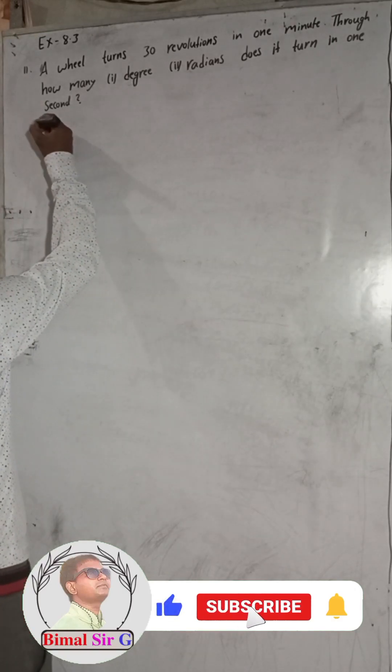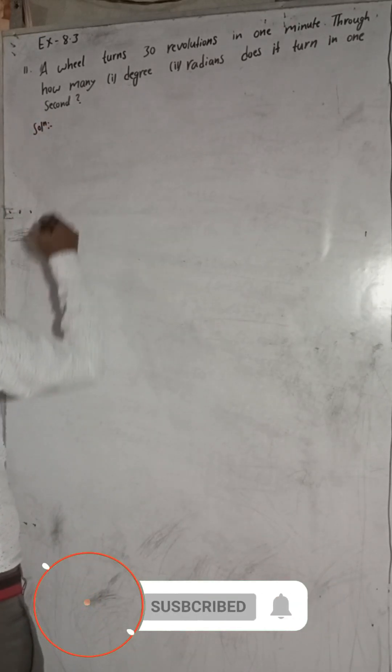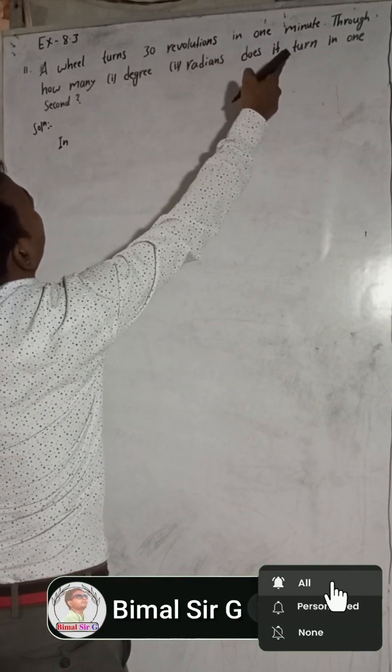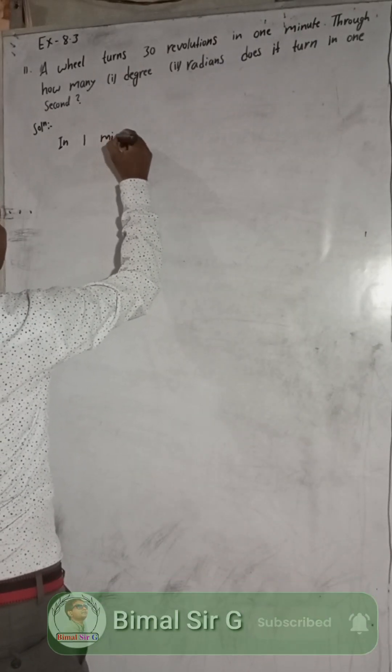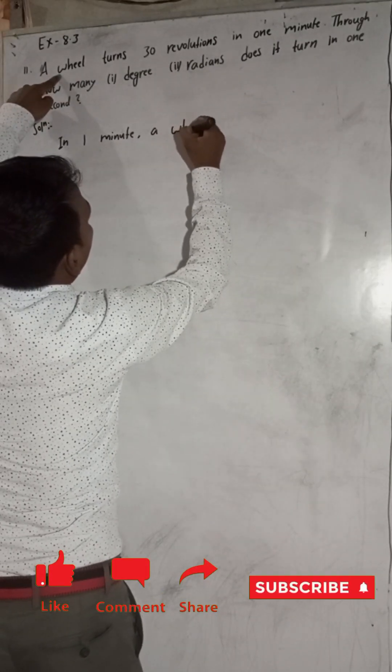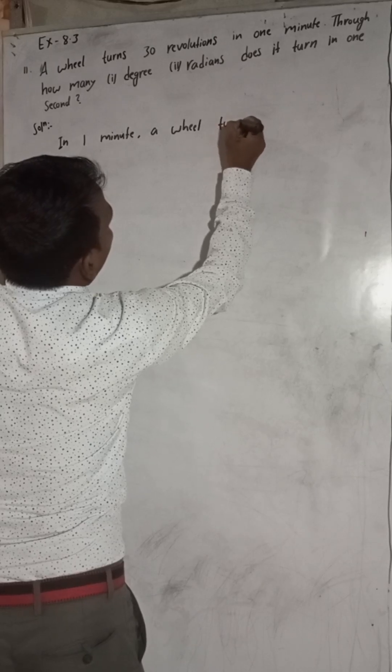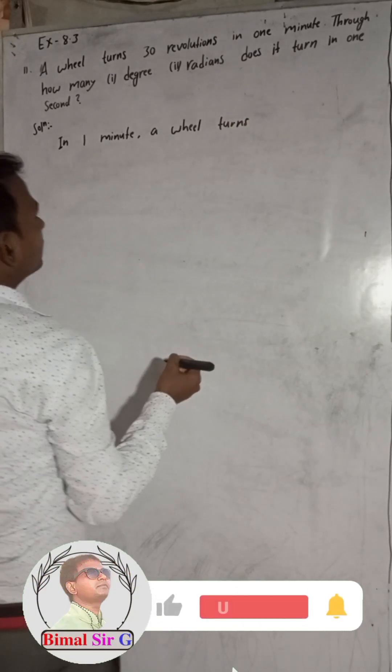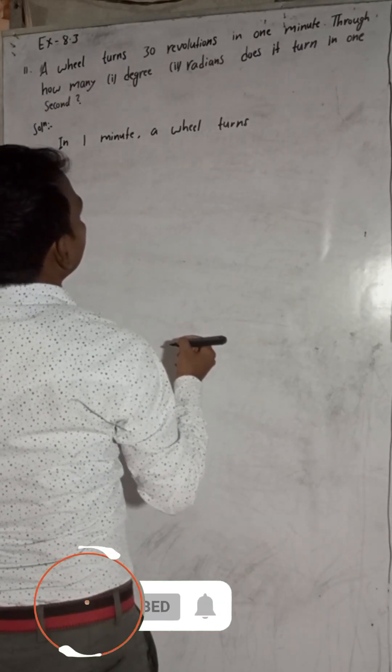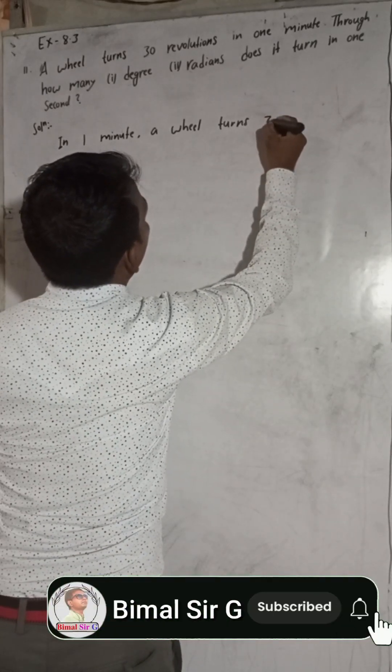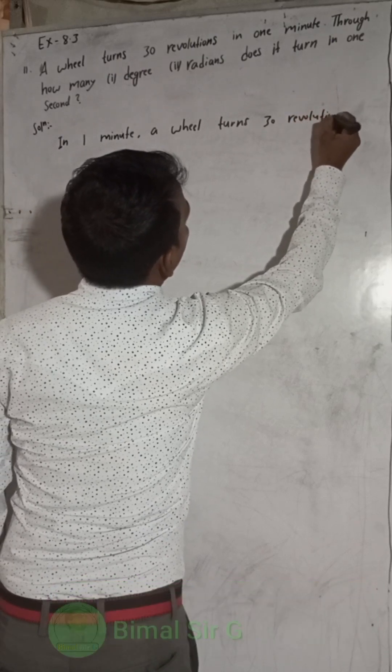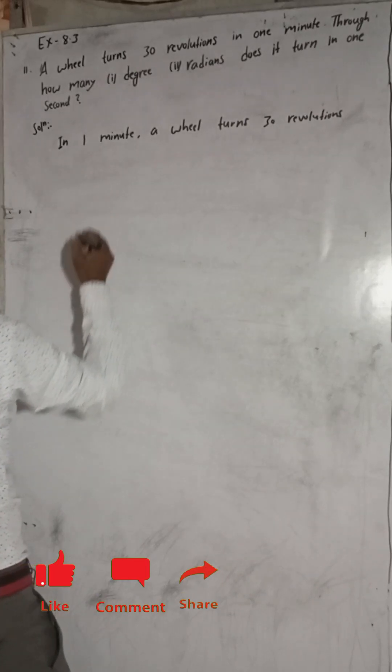So here, solutions. In 1 minute, a wheel turns 30 revolutions.